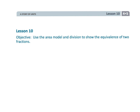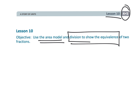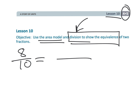That wraps up fourth grade module 5 lesson 10, where we're still using the area model but really moving toward the standard algorithm of division — showing, for example, that 8 tenths is equivalent to 4 fifths because both 8 and 10 can be divided by 2, giving us 4 fifths.